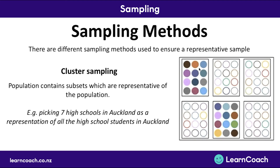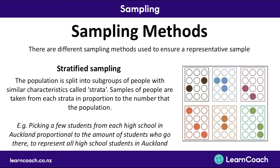Another example of cluster sampling: if you were studying a town, you might pick three streets in that town to represent the whole town, using every person on those streets. This is different to stratified sampling.